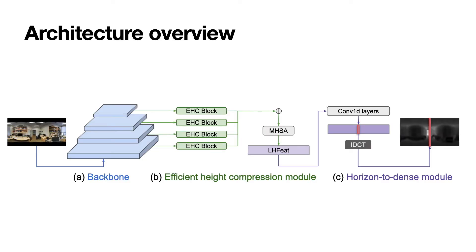This is an overview of HohoNet's architecture to predict pixel-level dense depth. The 360 image is processed by a backbone to extract a feature pyramid. Then the proposed Efficient Height Compression module is employed to flatten and blend the multi-level backbone features into the compact latent horizontal feature. Finally, a horizon-to-dense module maps the latent horizontal feature to pixel-level prediction.